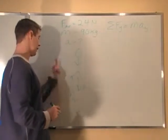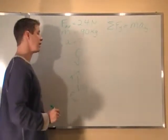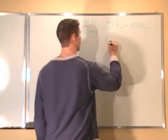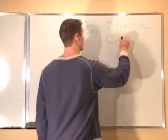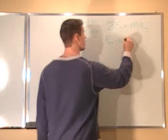So we have f-air, which is positive, weight, which is negative. So we have f-air minus his weight for the forces, equals mass times acceleration y.